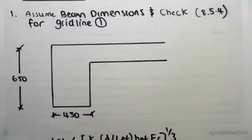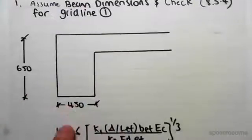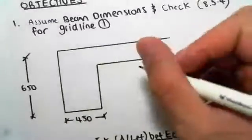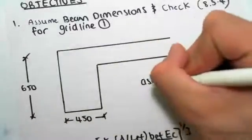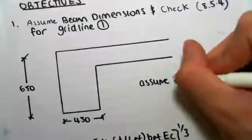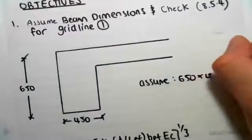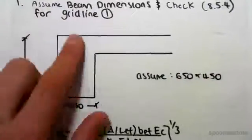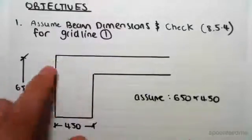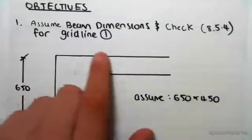We have an L-shaped beam. We're assuming a beam of 650 by 450, so we're assuming beam dimensions of 650 by 450. We don't know just yet the effective width; we're going to have to find out a bit later.